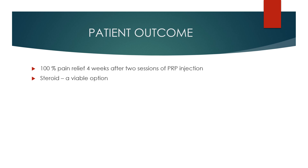Discussing the outcome of this patient: there was 100% pain relief four weeks after two sessions of PRP injection. Steroids were always a viable option, but PRP was chosen particularly because of the pathologies — there were many micro-tears within the substance — so PRP injection was planned accordingly.